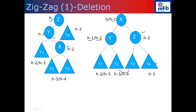A homework exercise: create an AVL tree of height h such that deleting a node requires h minus 2 rotations, demonstrating that O(log n) rotations are needed in the worst case for deletion. Each rotation is a constant-time operation involving just a few pointer changes, so the entire deletion algorithm works in O(log n) time.